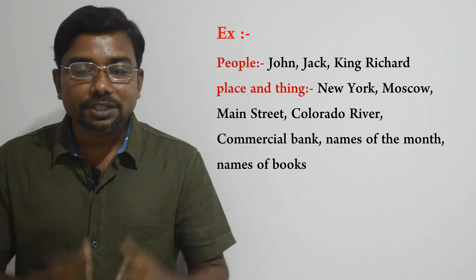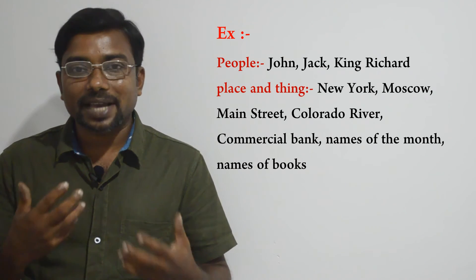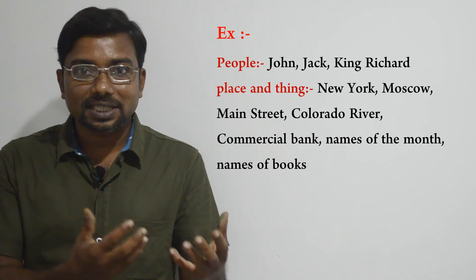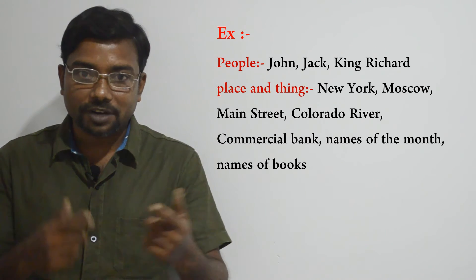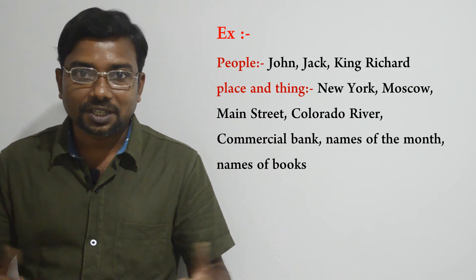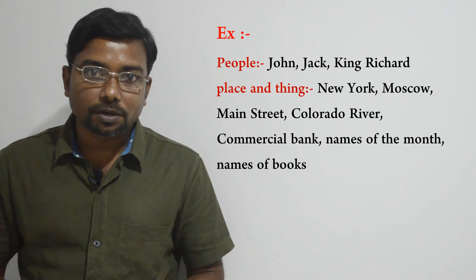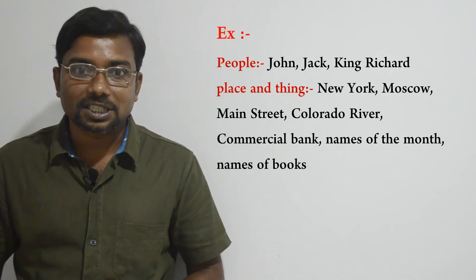Now we are going to look at some examples about proper noun. The names that we use for people or animals are proper nouns because we can identify a specific person or animal from these nouns. For example: John, Jack, King, Richard — these are proper nouns because we can identify specific persons from these nouns.